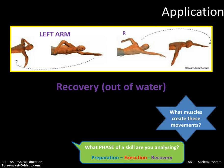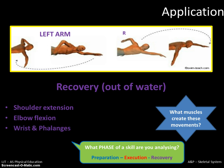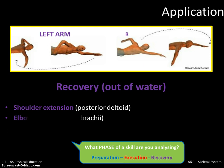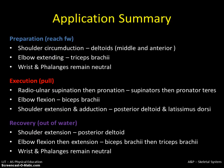Finally, the recovery phase: pulling your arm out of the water just before going back into the preparation phase. There is shoulder extension as the arm is lifted backwards out of the water, elbow flexion as you begin to bend the elbow, and the wrist and phalanges remain neutral once again. The muscles are: posterior deltoid for shoulder extension, biceps brachii for elbow flexion, and the wrist and phalanges remain neutral.